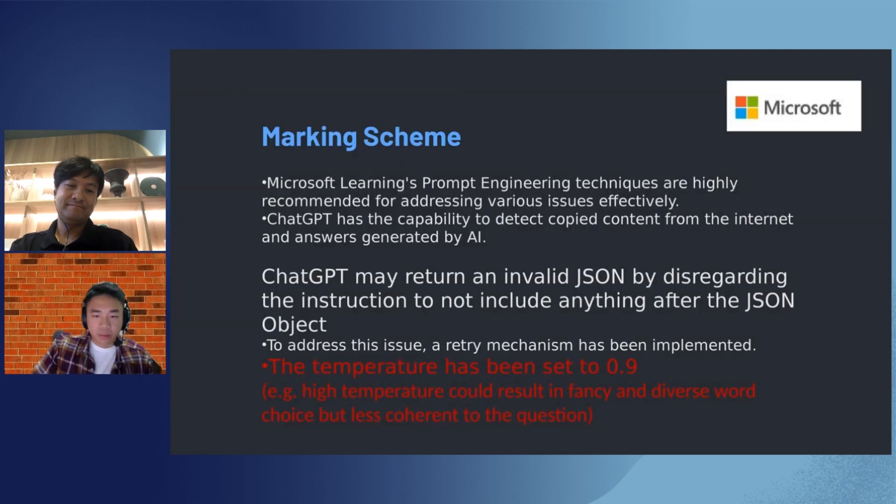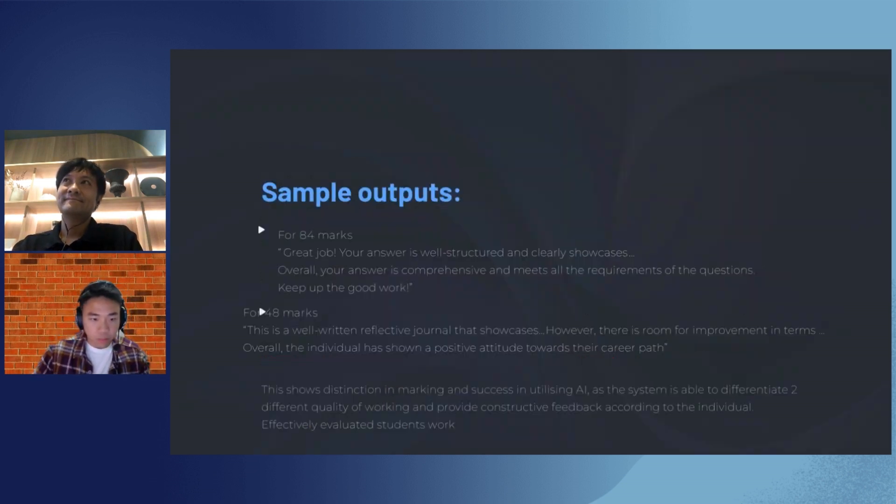And if we look down here, from the fifth section onwards, it is the format section. For the formatting rule, we want the AI to generate JSON format and replies in JSON because it is smart enough to follow our instruction to convert the result into JSON file. It is important to have JSON file because when JSON file can be passed back to Python, then we could read it back to the database for further analysis and for further functions. So, the marking scheme, what we emphasize here is that when we call for the ChatGPT portal, it may return invalid JSON by disregarding the instruction to not including anything. So, to address this issue, a retry mechanism has been implemented such as altering the parameters such as temperature because having a high temperature could result in fancy words and less coherent to what the question is about.